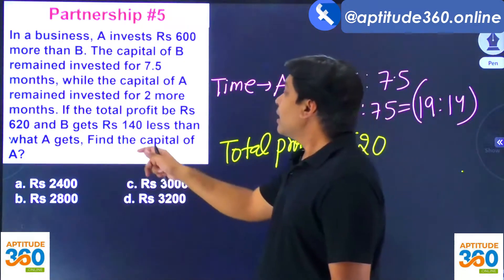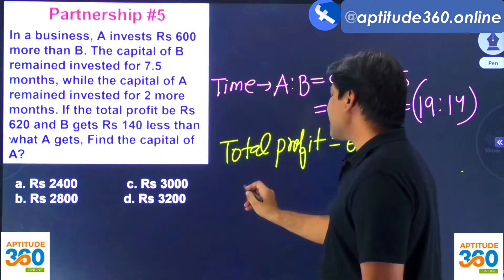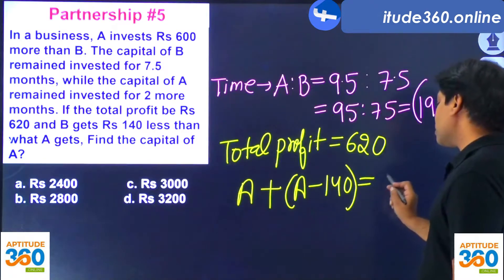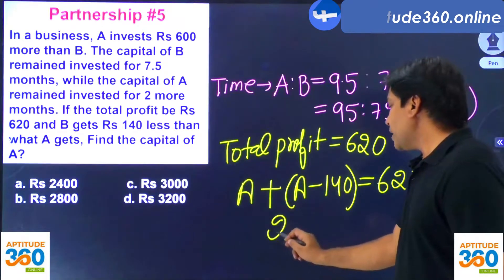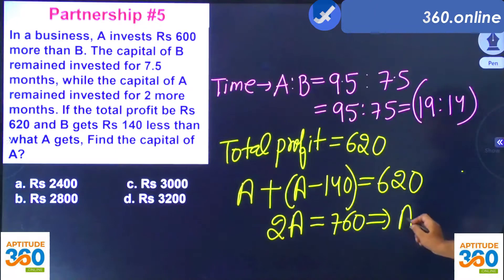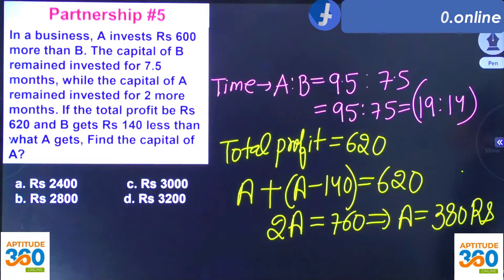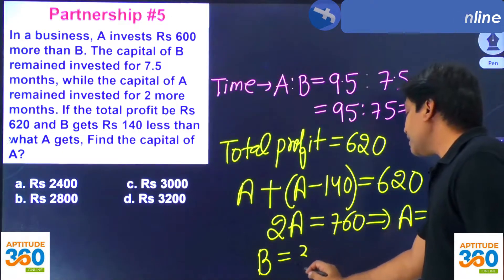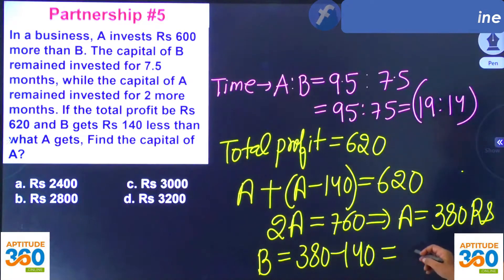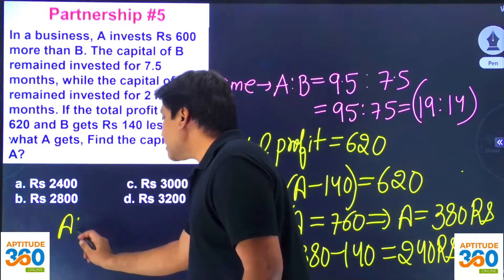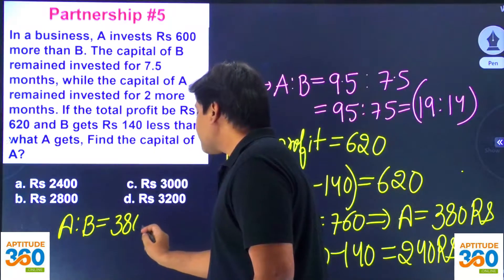B gets 140 less than what A gets. If A gets amount A, then B gets A minus 140, and this collective value equals 620. Simplifying: 140 goes to the other side, giving 2A = 760, so A = 380. Out of 620 rupees profit, A gets 380 rupees. B gets 140 less than A, so B gets 380 minus 140, which is 240 rupees.